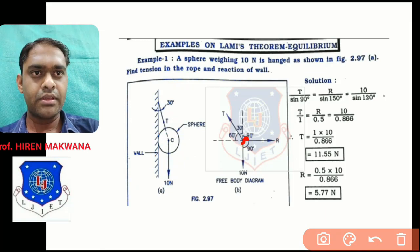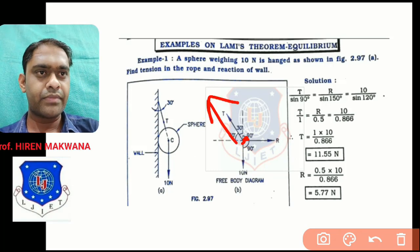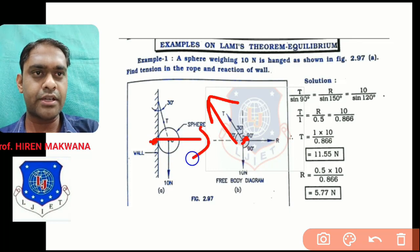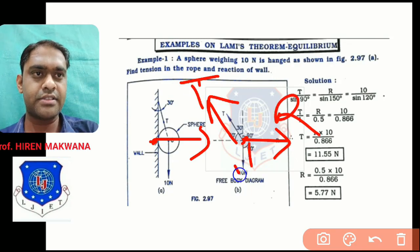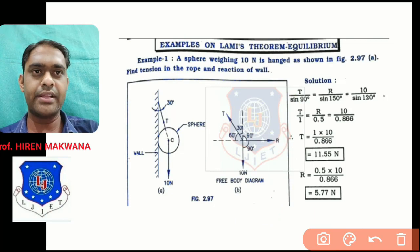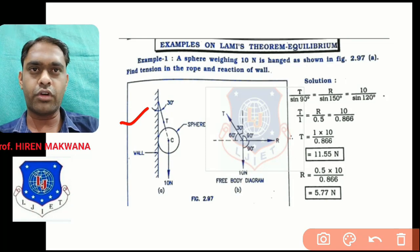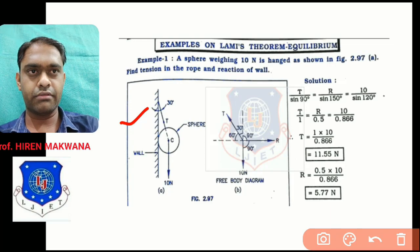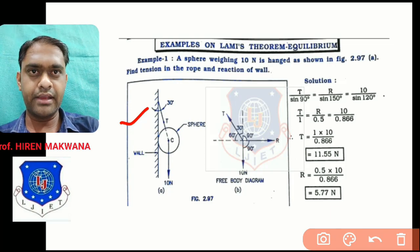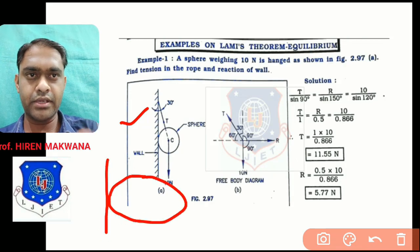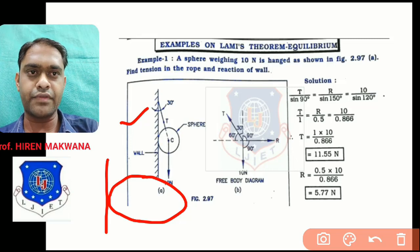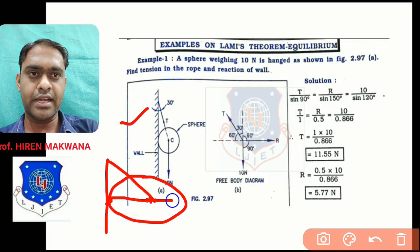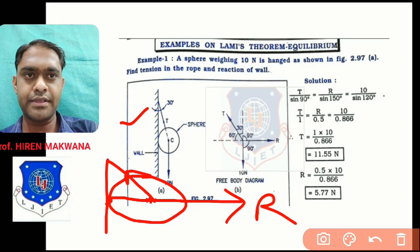Drawing the free body diagram: C is the center of the sphere. Along the rope there will be tension T. The reaction R of the wall starts from the contact point and passes through the center of the sphere. The vertical downward weight is 10 Newton. Now for the angles: 30 degrees is given between the rope and the wall. The reaction R starts from the contact point passing through the center.